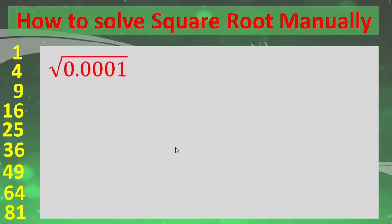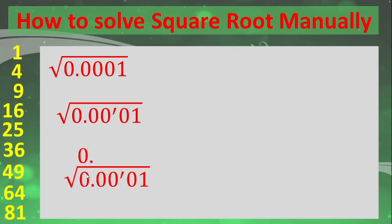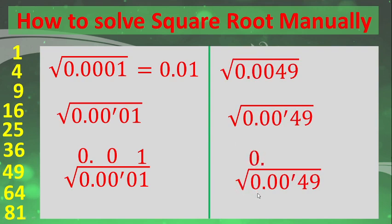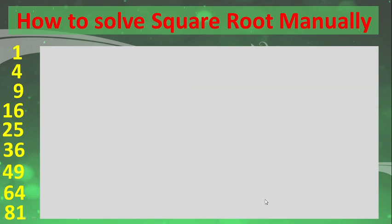For decimals, it's the same approach — group by twos from the decimal point going right. The square root of 00 (two zeros) is 0, and the square root of 1 is 1, so the square root of 0.0001 is 0.01. Similarly, for 0.0049, group by twos to get 00 and 49, giving a result of 0.07.